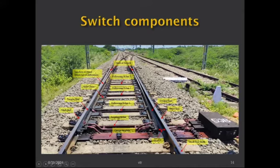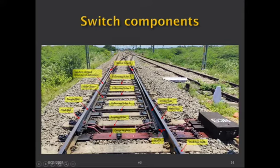A gauge tie plate is provided here to ensure proper gauge with no variation. In the old days with wooden sleepers, spike-killing could cause gauge problems, so a gauge plate was used to strengthen the gauge. Even with concrete sleepers, we now provide a gauge tie plate to ensure proper gauge.